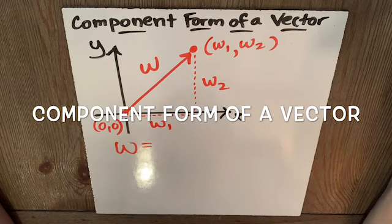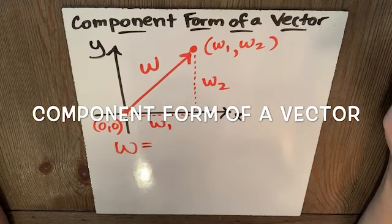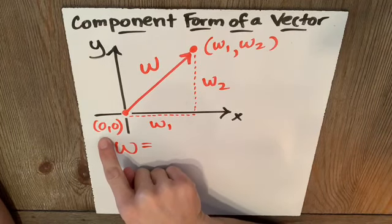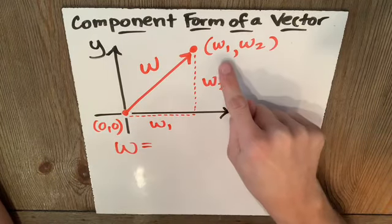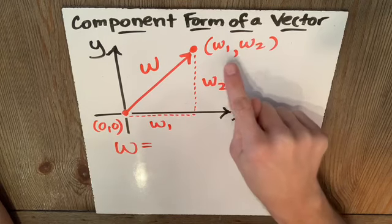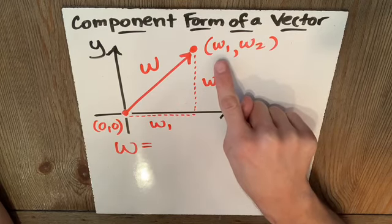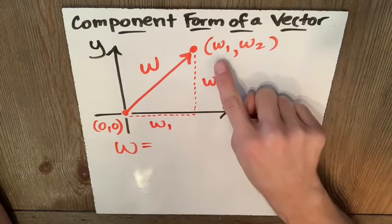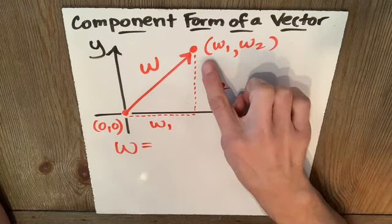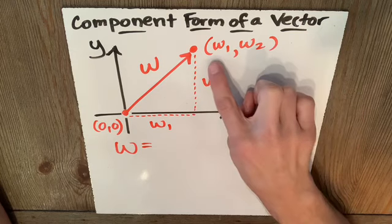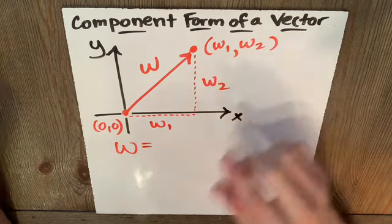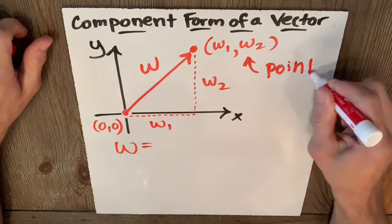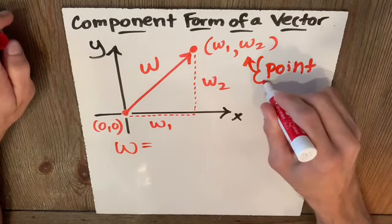Let's talk about notation here. I've drawn vector w in standard position, meaning its initial point is at zero, and it goes to some xy point, which I'm calling, very strangely now, w1, w2. How do I know that's an xy point? Because I have these curvy brackets. The curvy brackets mean that this is a point, so curvy brackets means we're talking about an xy point.